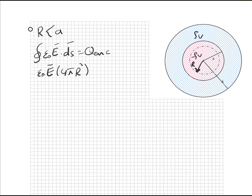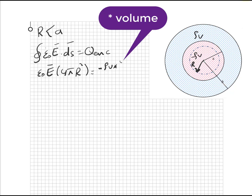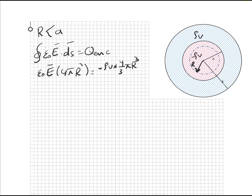R كابتول اللي هو أقل من A، راح تشوف إنه مينس رو في في المساحة اللي هي أربعة على ثلاثة باي R تكعيب. هاي هي Q نكلوز ضمن هاي المنطقة - هاي بالنسبة للريجين الأولى.